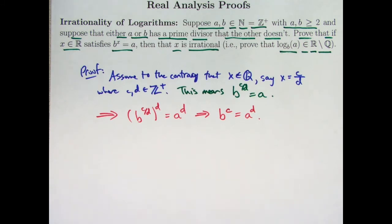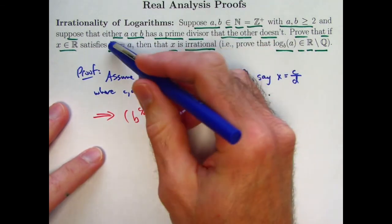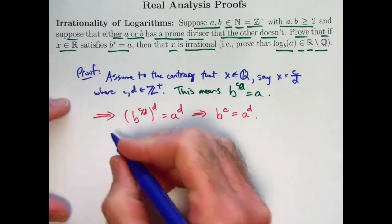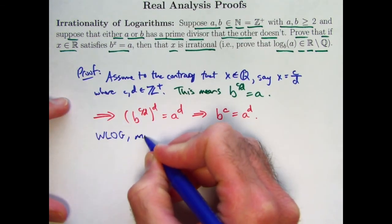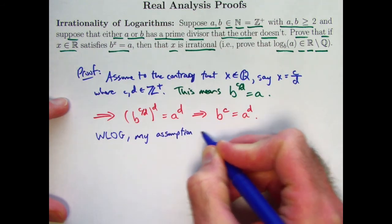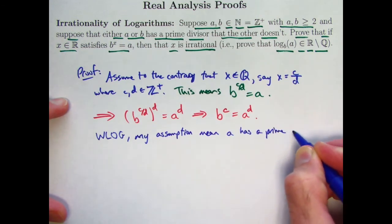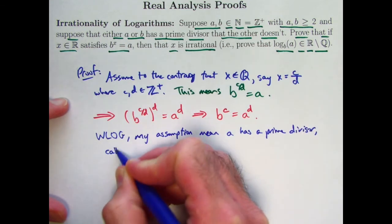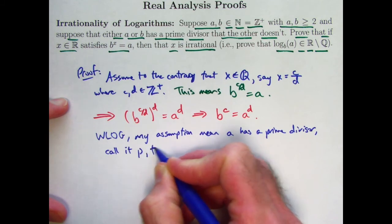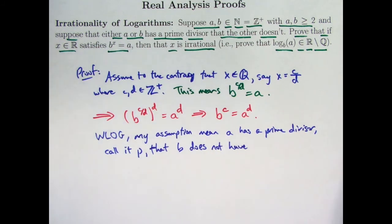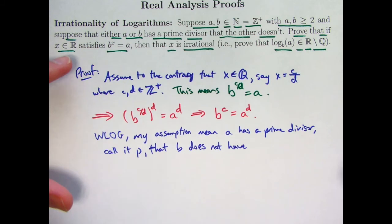And once again, we hit a spot where we're like, okay, scratching our heads, what do we do now? And a light bulb should go on, hopefully, that I need to use my extra assumption here. Either a or b has a prime divisor that the other doesn't. All right, say it's a. Without loss of generality, my assumptions mean a has a prime divisor, call it p, that b does not have.